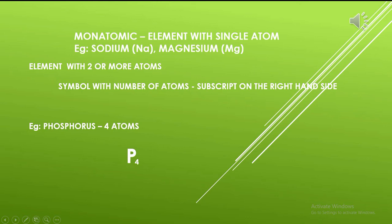An element is termed monatomic if it has only a single atom. In such a situation, its molecular formula is the symbol of the element. For example, sodium and magnesium.